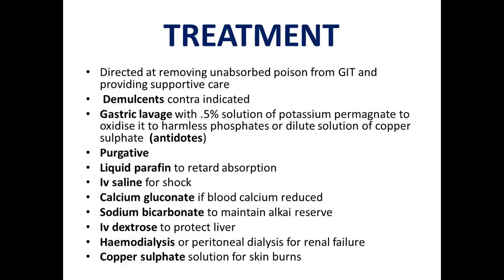Now we come to the treatment of acute phosphorus poisoning. The principle of treatment is directed at removing unabsorbed poison from the GIT and providing supportive care. The two main objectives are: 1. removing unabsorbed poison from the GIT; 2. providing supportive care — life-saving procedures. Demulsants are contraindicated; if you recall from general toxicology, these are mechanical antidotes. They are not used in phosphorus poisoning because they are fatty substances and phosphorus is itself a fat-soluble poison.